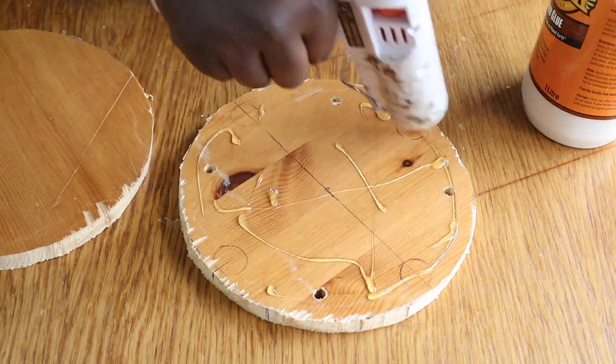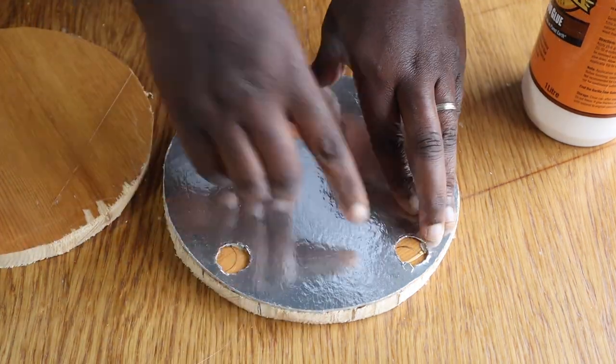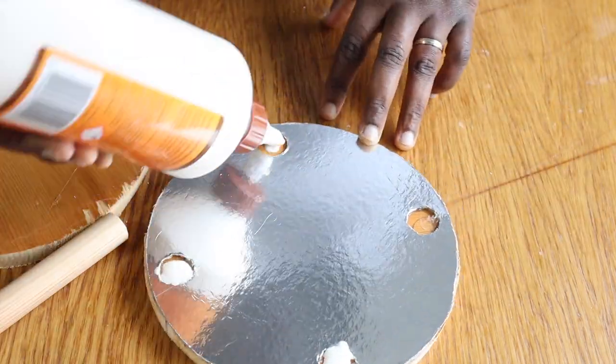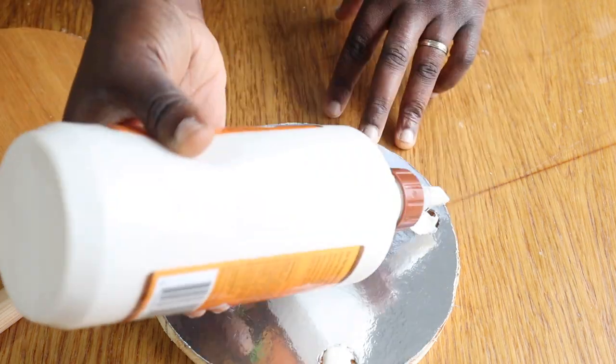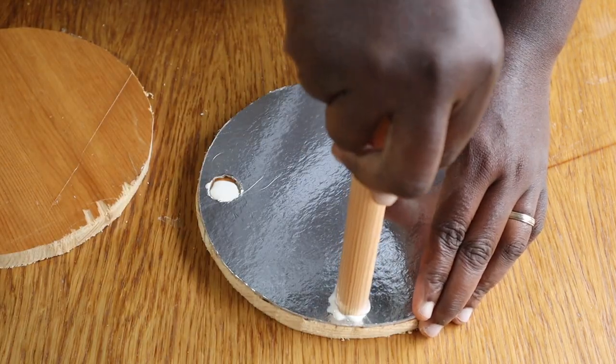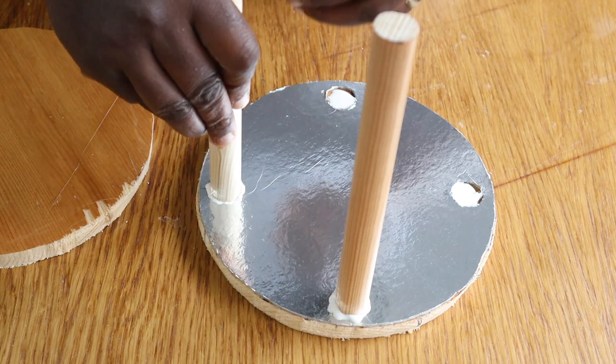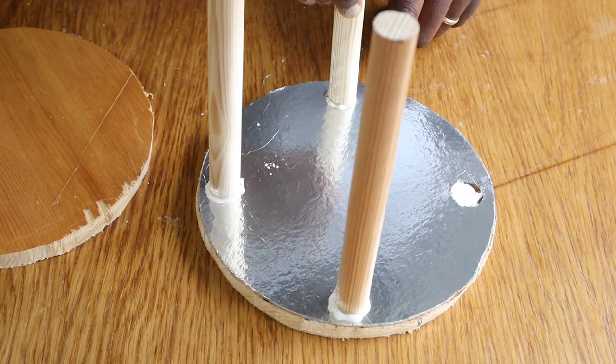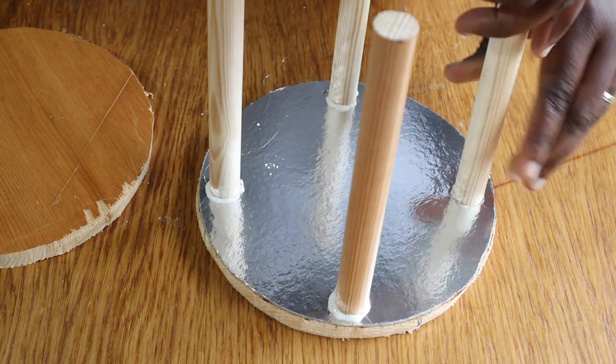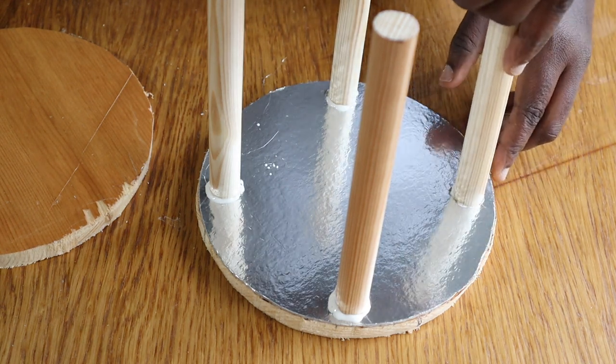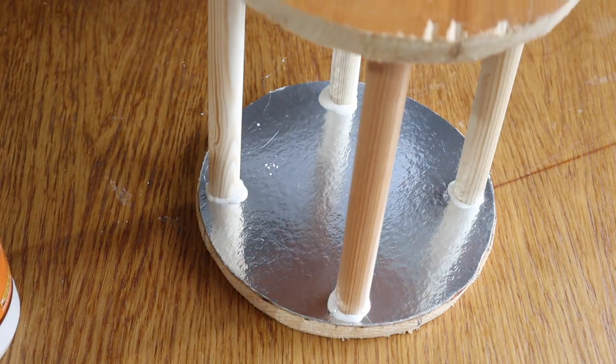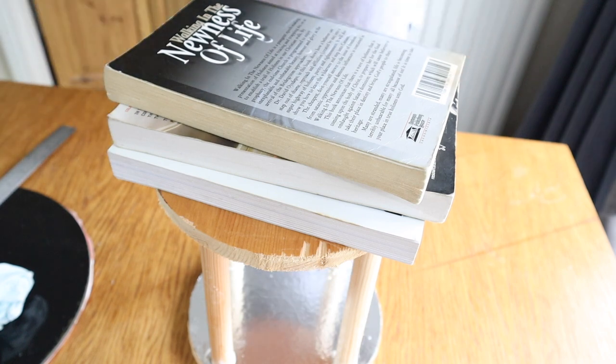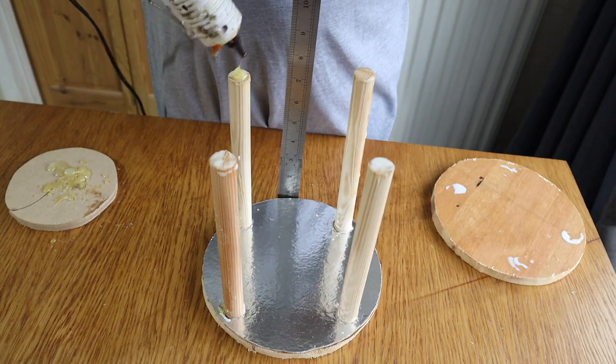Then using the wood glue I would also glue the four dowels to the bottom board. Next I'll place my second circular board on top of the dowels, place a stack of books on it to press everything down, then I'll leave it to dry for 30 minutes. After 30 minutes I went on to attach the top board.